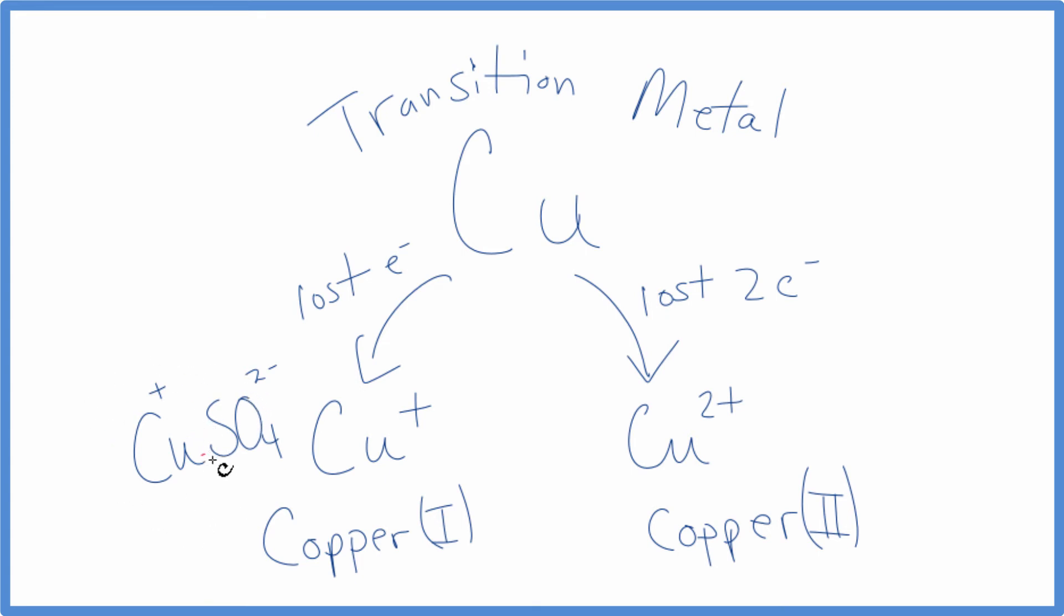So put a little 2 here. Two times 1+ is 2+, and that balances out the charge on the 2-. Our net charge is zero. For the copper(II) ion, if we have CuSO4, the sulfate ion is 2-.